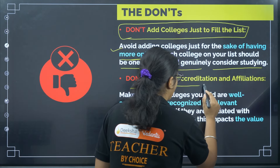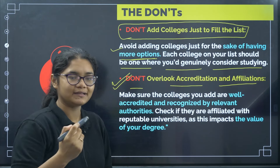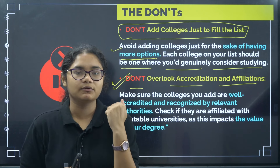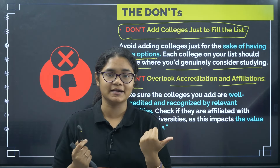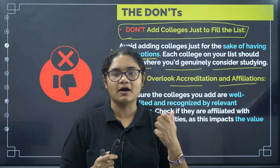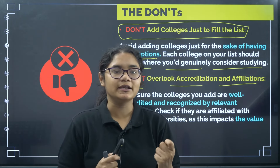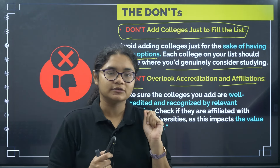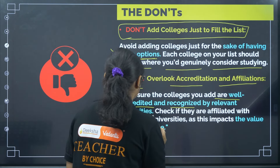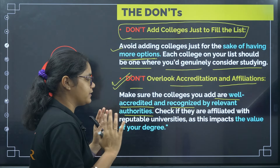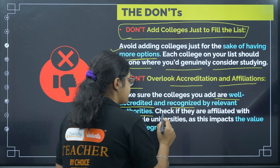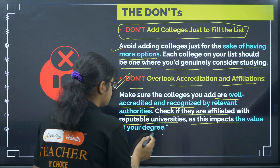The second don't: don't overlook accreditation and affiliations. If a college is properly accredited and affiliated, whatever degree you receive after four years will be considered valid. If the college is not affiliated or not a reputable institution, the degree you get will not hold value. The value of your degree depends on the ranking and accreditation of the college. So whichever college you add must be well accredited, recognized by the relevant authorities, and affiliated with reputable institutions — because this directly impacts the value of your degree.